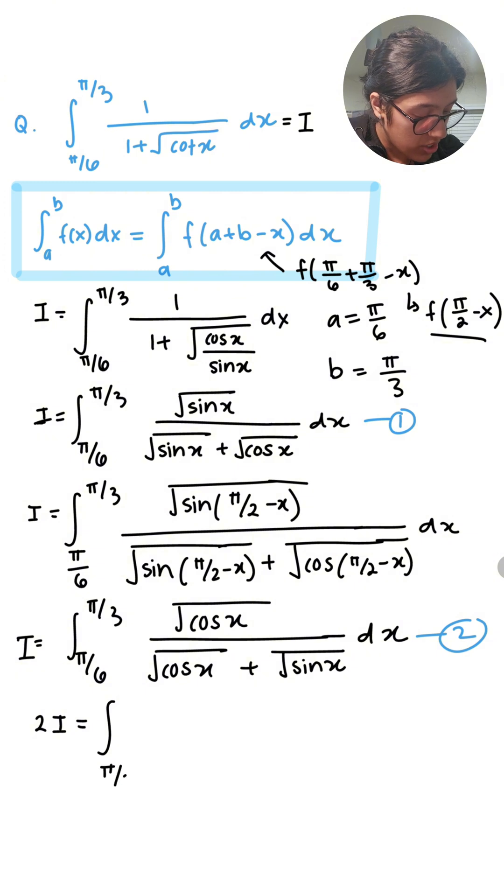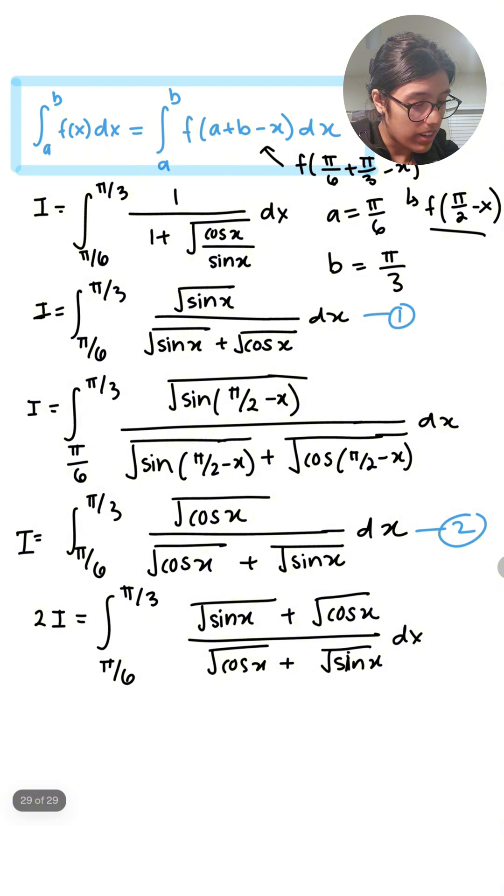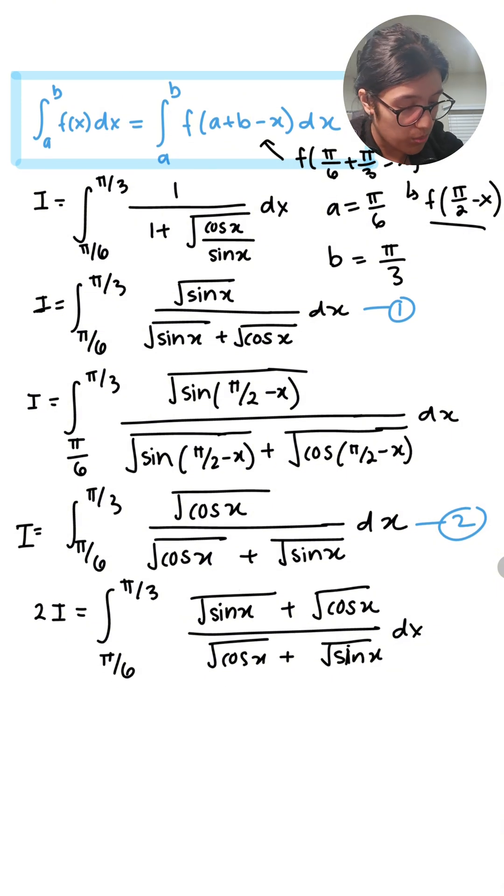And the integral from π/6 to π/3 of (√sin x + √cos x)/(√cos x + √sin x) dx. By adding equations 1 and 2, I get this integral, which is just equal to 1.